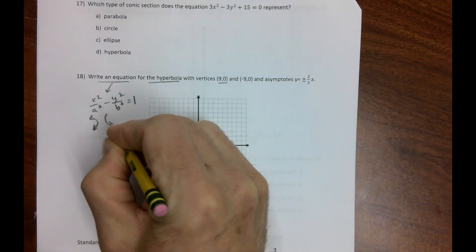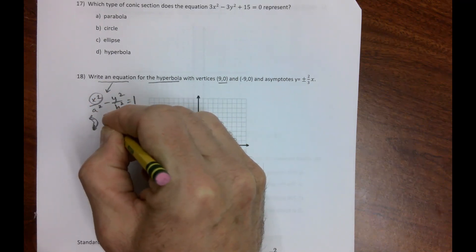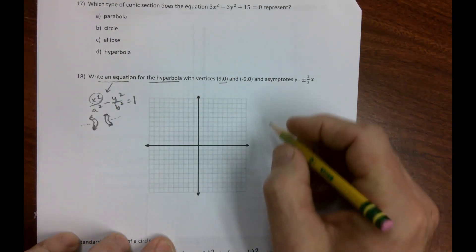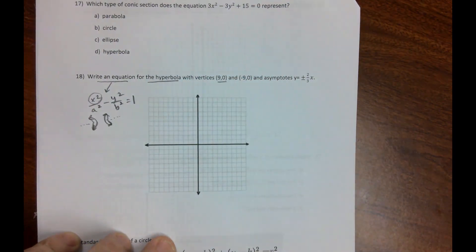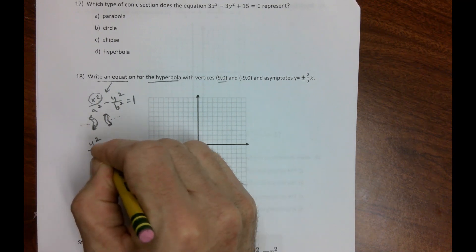If the equation starts with x, then the pac-men gobble up the dots on the x-axis. Or we could look at it like y²/a² - x²/b² = 1.